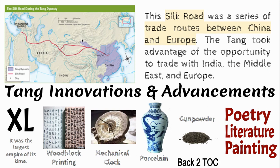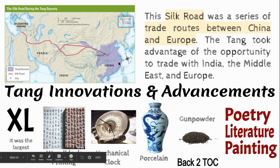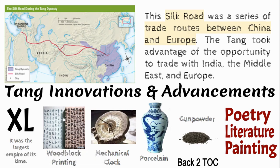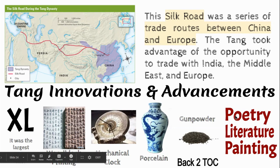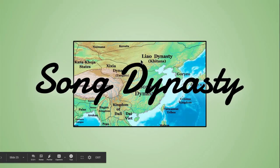The Tang also worked the Silk Road — a series of trade routes between China and Europe — and traded with India, the Middle East, and even into Europe. Some of their innovations included woodblock printing, the mechanical clock, porcelain, gunpowder, poetry, literature, and painting. They had the largest empire of their time.